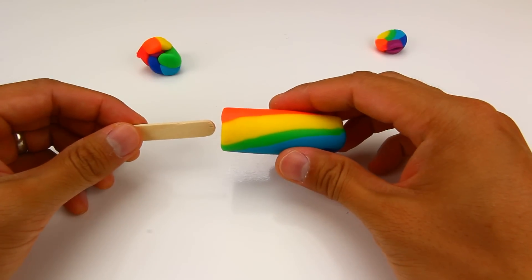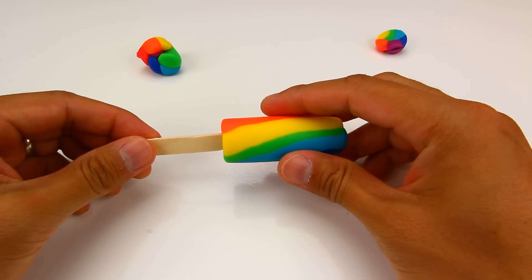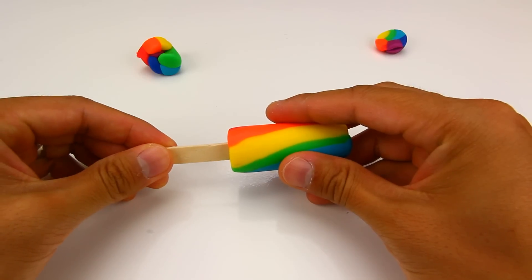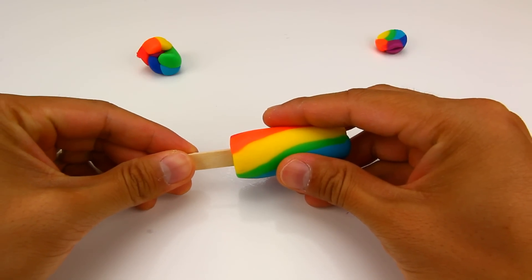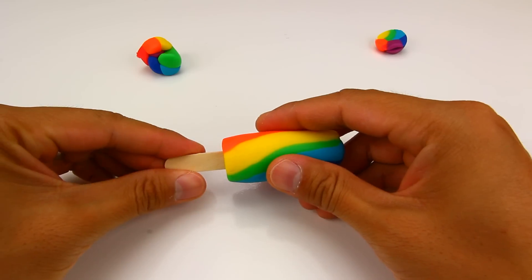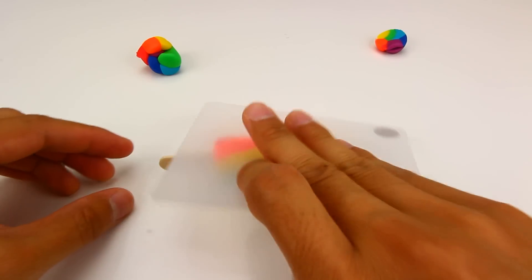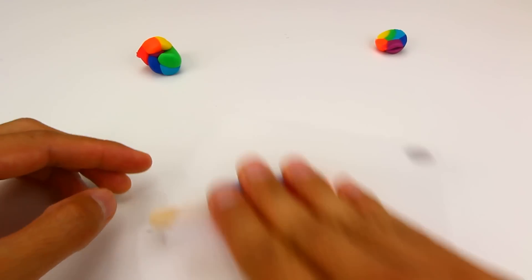The last part is to put the stick in. Once the stick is in, then you can just roll and smooth it up a little bit more.